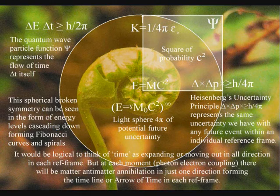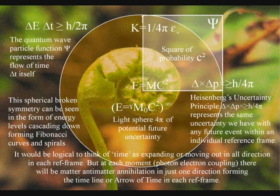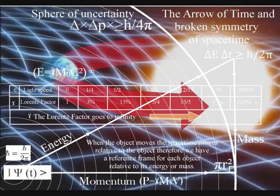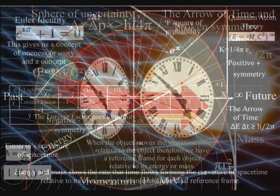Tesla was critical of Einstein's relativity and he said that space cannot be curved for the simple reason that it can have no properties. But in this theory gravity is a secondary force and the curvature of spacetime is formed by the rate that time flows.